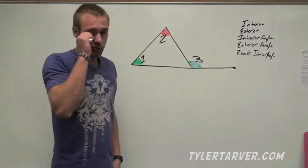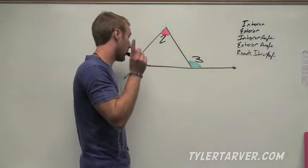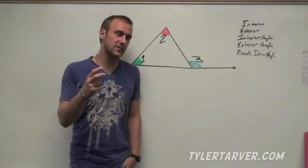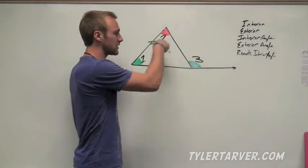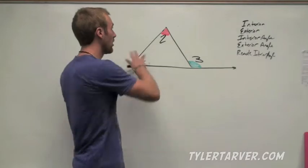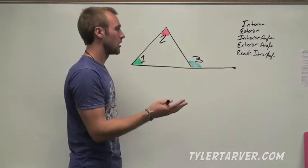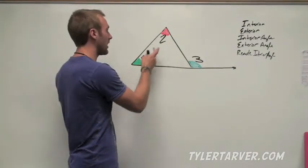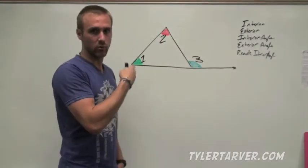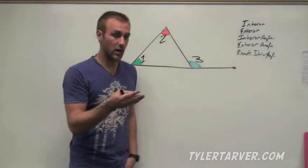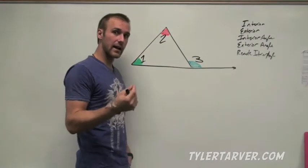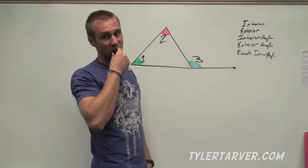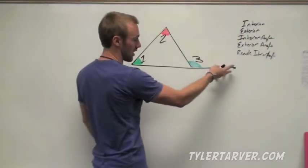You would draw something like this in your notes. Things you need to know — I've already talked about it. Interior means inside, so if we're talking about the interior, we're talking about inside the triangle. Exterior means everything outside the triangle. Interior angles would be angles inside the triangle — so angles one and two are inside the triangle. Angle three would be exterior, because it's outside the triangle but still connected to it. See how that line extends? It's outside the triangle.